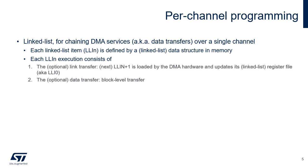Transfer chaining for a particular channel is performed through a linked list. Each item of the linked list is called a linked list item or LLI, which is a structure allocated in memory. The LLI has to be initialized with the values to transfer to the control registers when chaining occurs. Each LLI execution consists of an optional link transfer that loads the next LLI and updates the control registers, and an optional data transfer with a granularity called a block.